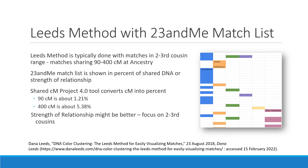When using the 23andMe match list for the leads method — sorting close matches into four grandparent groups or colored clusters — this is typically done with matches in the second to third cousin range. At Ancestry, Dana Leeds suggests choosing matches sharing 90 to 400 centimorgans. In 23andMe's DNA relatives page you see percent of shared DNA instead of centimorgans. Converting: 90 cM is about 1.21% and 400 cM is about 5.38% of shared DNA, using the Shared centiMorgan Project tool. So you can list everyone within the 1.21% to 5.38% range in your leads method spreadsheet.